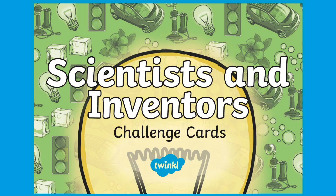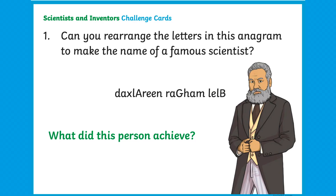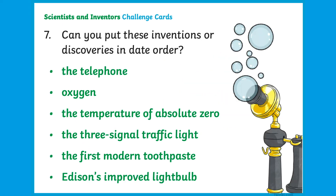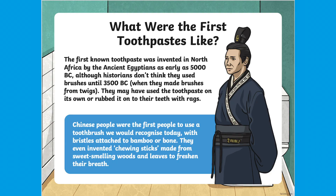Packs also contain these fun scientists and inventors challenge cards. Can children rearrange an anagram to name a famous scientist and say what they achieved? Can children match scientists with their achievements? Can your child arrange a list of inventions and discoveries into chronological order? Children will love finding out about the history behind the science of everyday objects.